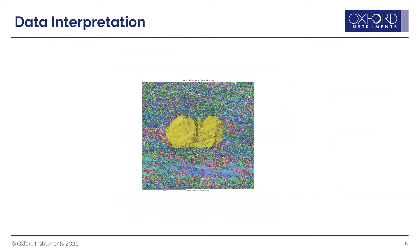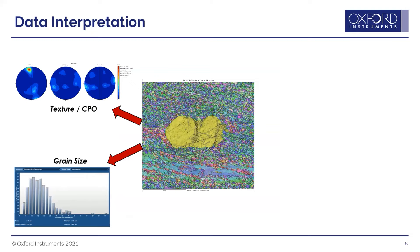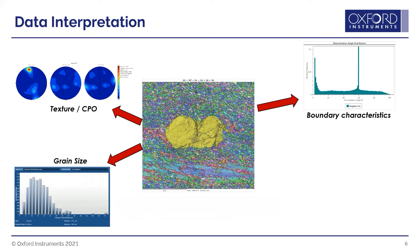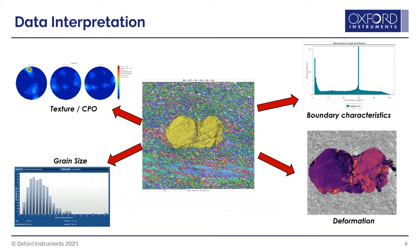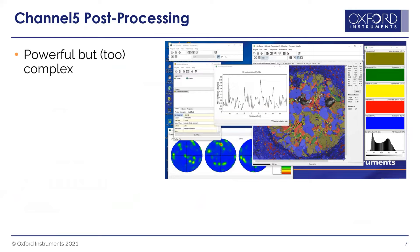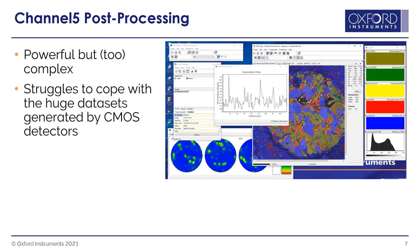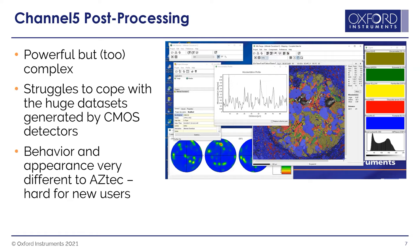This is an example of a feldspar grain. You usually want to take these maps and go the extra step: look at grain size distribution, texture, preferred orientation, boundary conditions — is there twinning or low angle strain? And deformation of the system. Phase fraction is a common analysis as well. What we used to use was a system called Channel 5 — it was powerful but a little too complex, and it really struggles with the large data sets we're creating now.